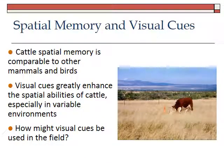Talking about spatial memory and visual cues: cattle, sheep, goats, and deer all have really good spatial memory, comparable to other mammals and birds. Some birds like Clark's nutcrackers have extremely good spatial memory. Cattle know where they've been — when you put animals back into a pasture they've been in before, they know where the water is and where their resources are without retraining. Visual cues can enhance their spatial abilities, so when you put animals into brand new places, you could use spatial cues to help direct them. Year to year, green areas or shaded areas in the pasture can change, and animals pick up on that.